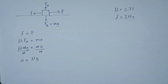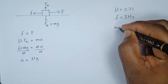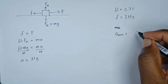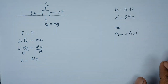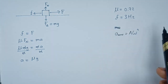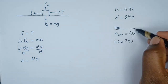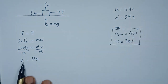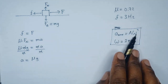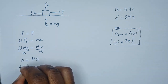At this point it's important to note that the maximum acceleration in SHM is given by amplitude times omega squared. The formula for omega — since we've been given frequency — is omega equals 2π times frequency. These are the two formulas we'll incorporate to find the amplitude. We substitute the acceleration with amplitude times omega squared, giving us: amplitude × ω² = μg.